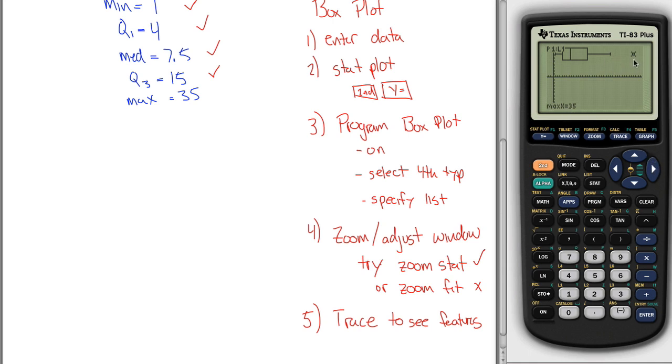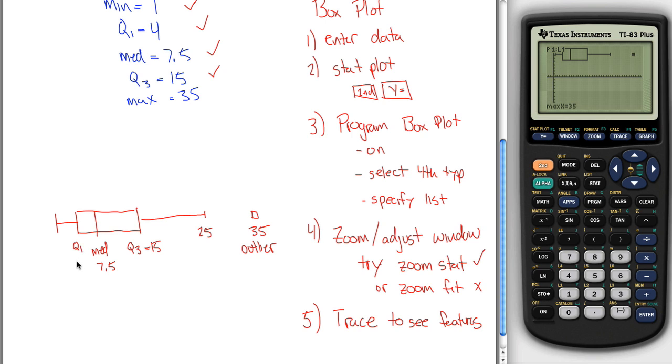This is our largest observation that is not above the upper fence, this x equals 25. And if you go out one more to the right, we see that our max value here is 35. So what this is saying is I have my box plot that looks something like this. And I got this value out here. And this one is my outlier at 35. And then I had 25 here. This is my third quartile Q3, which was 15. This is my median, which was 7.5. My first quartile, which was 4. And my minimum, which was 1.